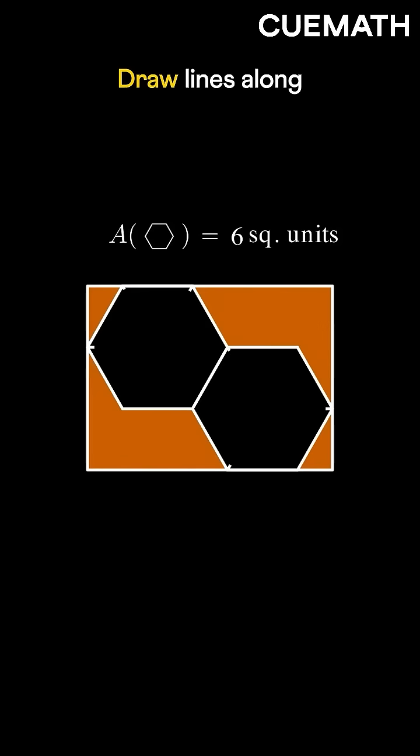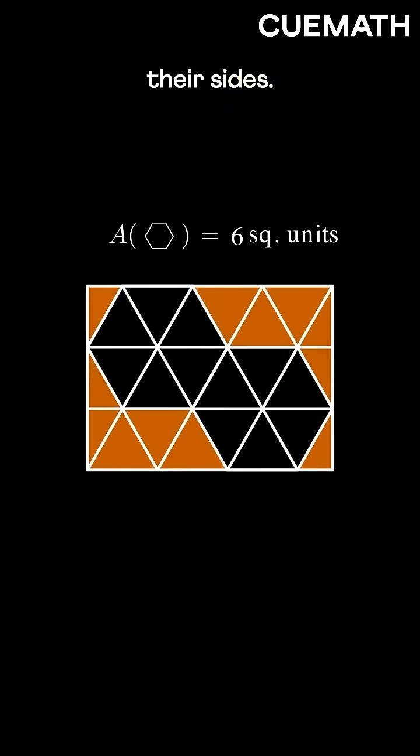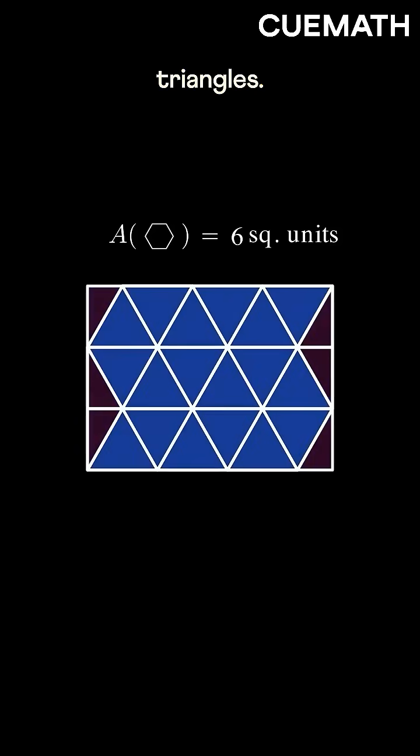Let's solve it visually. Draw lines along the diagonals of both hexagons and their sides. This splits the rectangle into two varieties of triangles.